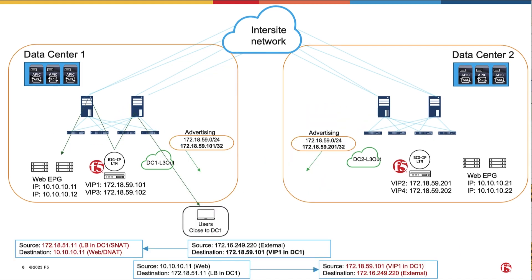Traffic sourced from the client will then go through the F5 Big-IP LTM, which owns the selected VIP in the DNS response, and then to an associated real application server that can be in the same data center or a different data center as the Big-IP LTM.